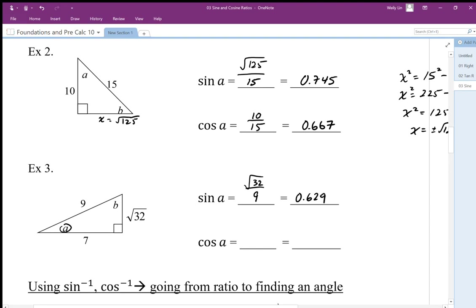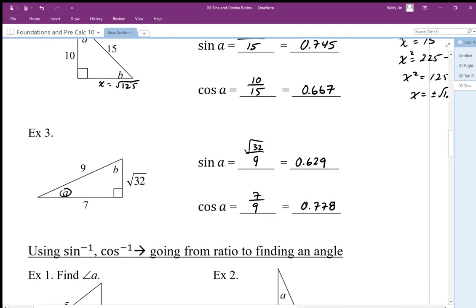And then the cosine of angle A is going to be the adjacent side to angle A compared to the hypotenuse. And when we divide that, we end up with 0.7 repeating. So I'm going to round that to 0.778 for the third decimal.